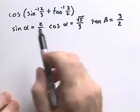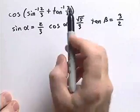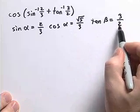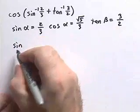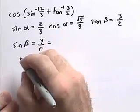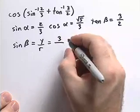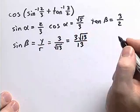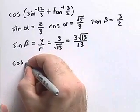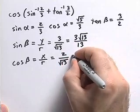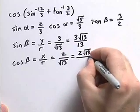Now that we've found r, we also need to find the sine of beta and the cosine of beta to finish our problem. We've rewritten the expression to evaluate, along with sine of alpha equal to 2 thirds, cosine of alpha equal to the square root of 5 over 3, and tangent of beta equal to 3 halves. The sine of beta equals y over r; y was 3 and r was the square root of 13, so sine of beta equals 3 times the square root of 13 divided by 13. The cosine of beta equals x over r; x is 2 and r is the square root of 13, so cosine of beta equals 2 times the square root of 13 divided by 13.